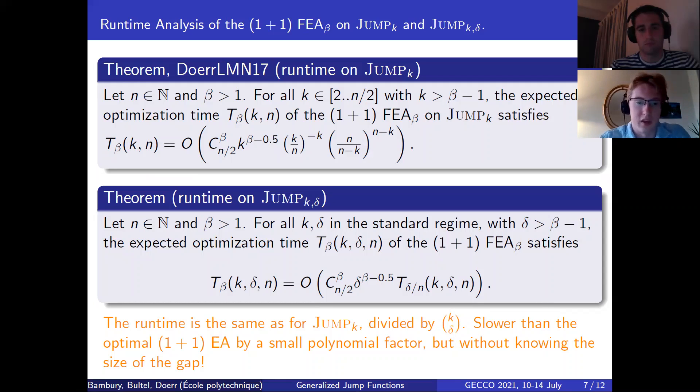The runtime analysis of the fast evolutionary algorithm has been done by Doerr and collaborators in 2017. They've obtained the following results for the expected runtime of the algorithm. It is only a small polynomial in k slower than the (1+1) EA with optimal mutation rate. Now our result is a generalization on the Jump_{k,δ} benchmark. We provide the fact that for k in the standard regime, the expected optimization time satisfies the formula here, which is essentially the same as on Jump_k, only we replace k by delta, still coherent because this is the size of the gap. And if you follow as well, you'll see that the expected runtime here is also divided by k choose delta compared to the one up top. So it's still slower than the optimal (1+1) EA, but only by a small polynomial factor.